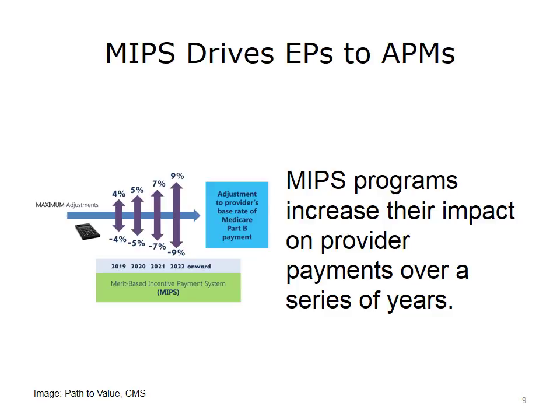For 2019, CMS set the maximum amount of adjustment from MIPS to 4%. The percentage of the adjustment amount increases over time, reaching a maximum of 9% by 2022 in the proposed rule. At 9%, the penalties incurred can start to have significant impact. Thus, by 2022, CMS is expecting to see these MIPS payment incentive programs largely affect the way health care is both paid for and provided.